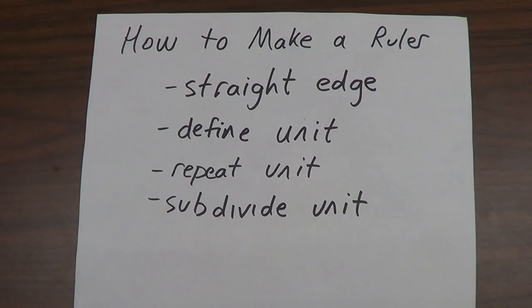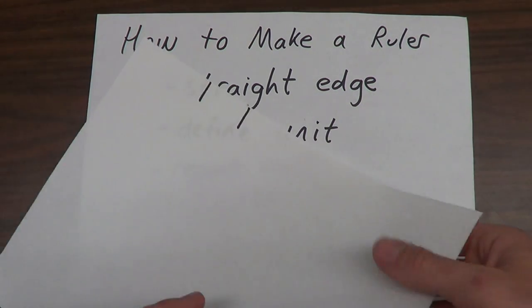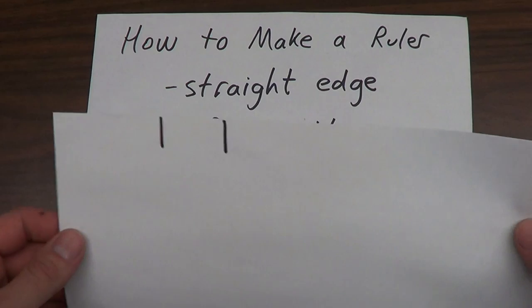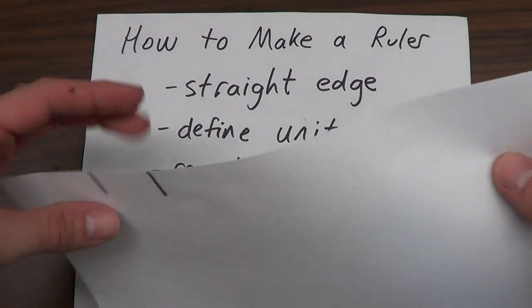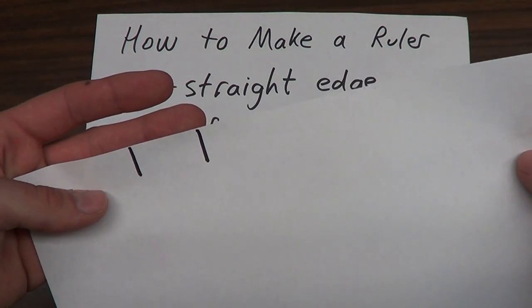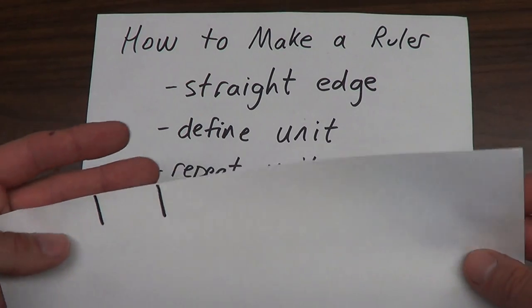To make a ruler we need a few things: a straight edge, a well-defined unit, such as this. I've taken a piece of paper which has a straight edge and then I've drawn two lines which are separated there. This gives us a well-defined unit.